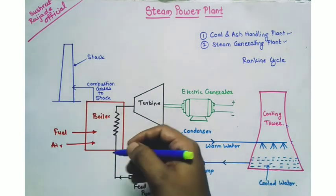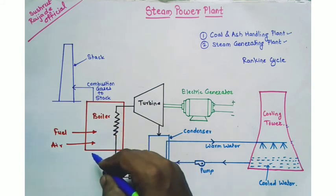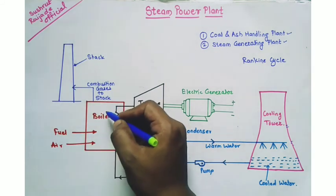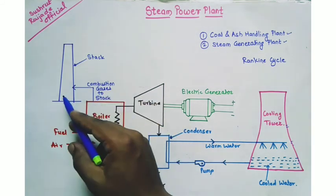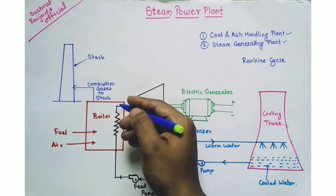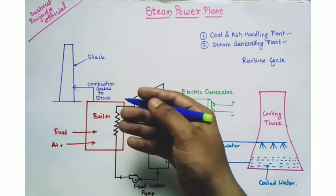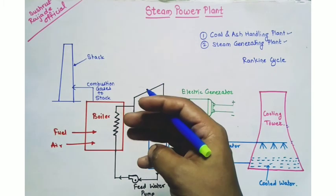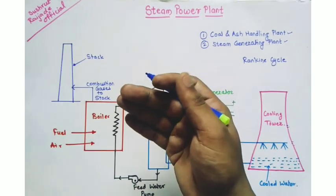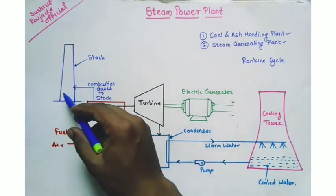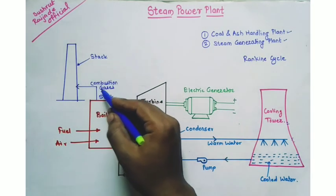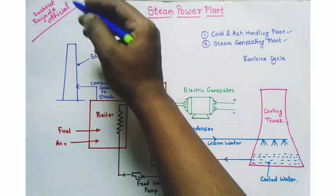The gases coming from the boiler are called flue gases, and those combustion gases are directed towards the chimney. The heat present in the flue gases is utilized in different components like the economizer, superheater, and evaporators. After that use of heat from the flue gases, the flue gases pass towards the stack — that is, the chimney — and are then released into the atmosphere.